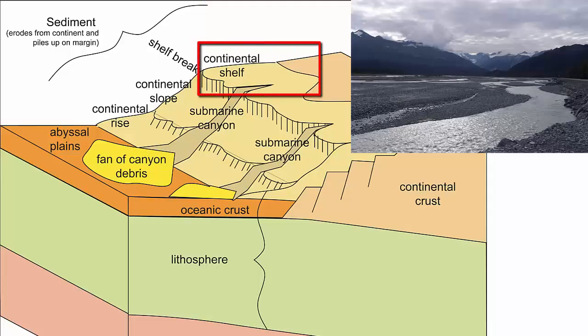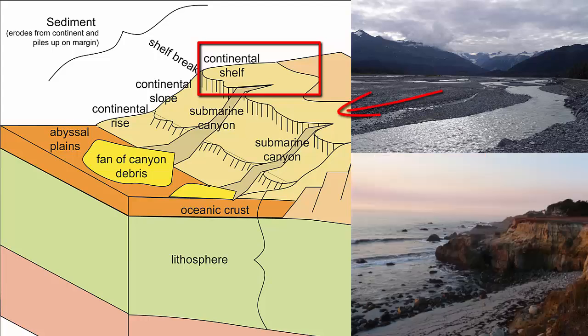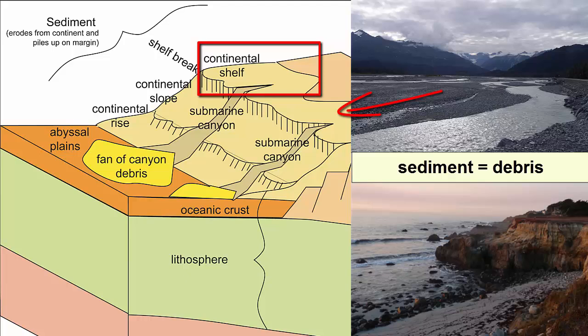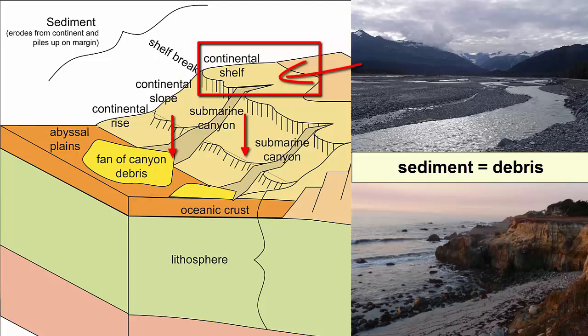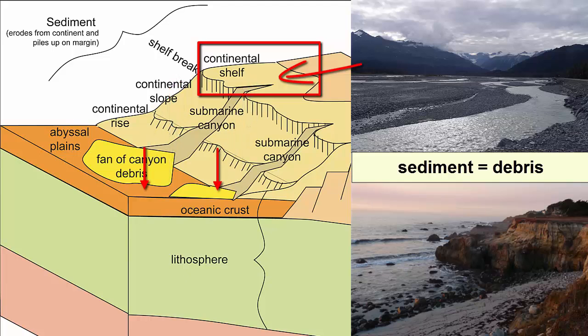The continental shelf is made from sediment that collects along the coast by rivers and gravity carrying it to the oceans. Sediment is just another way of saying debris — bits and pieces of rock, mineral, and organic material that collects atop low-lying areas. Since the ocean is the lowest lying area in the world, it should be completely covered with the constant raining down and piling up of this debris or sediment. And it is. The more sediment that is carried to the coast, the bigger and wider the continental shelf becomes.